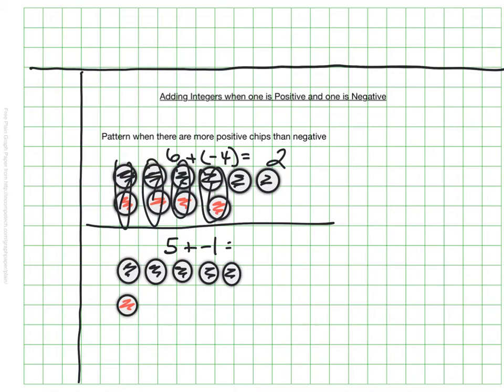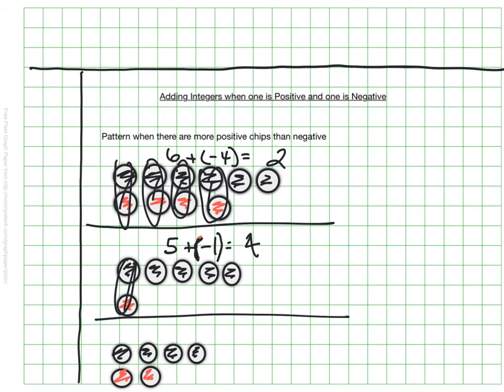The second example is 5 plus negative 1. And sorry, I usually put parentheses around there so you can tell that that negative goes with the 1. So we have 5 plus negative 1. And if we cross off our zero pairs, we are left with a positive 4. And let's do one more example. And our last example here will be a 4 plus a negative 2. And of course, I'm going to cross off zero pairs. And I am left with just 2.